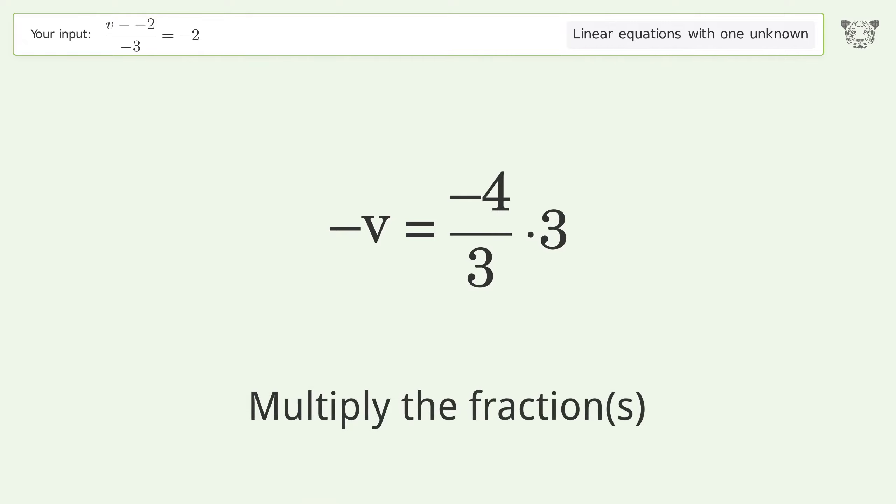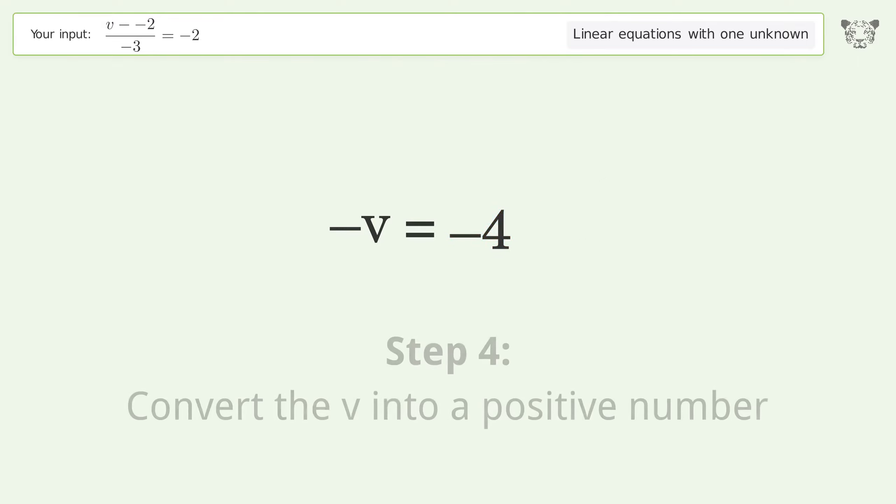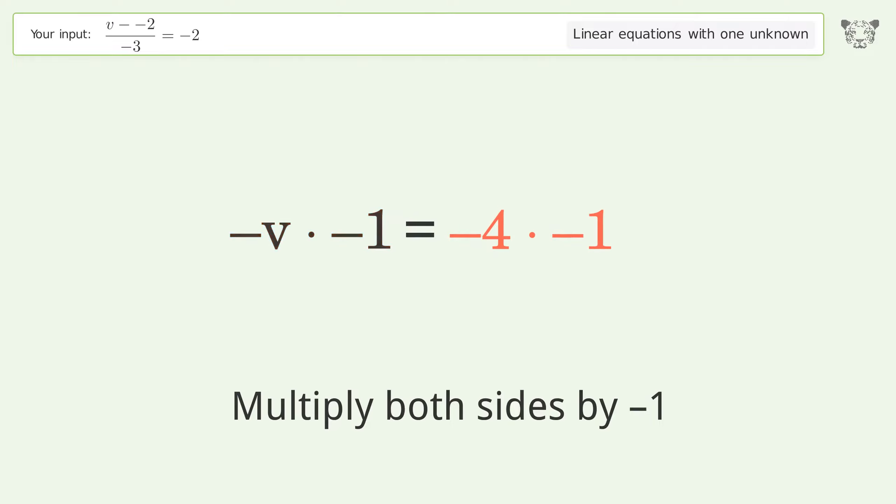Multiply the fractions. Simplify the arithmetic. Convert the v into a positive number. Multiply both sides by negative 1. Remove the 1s.